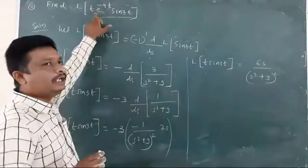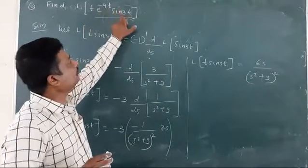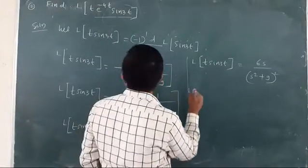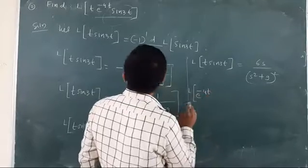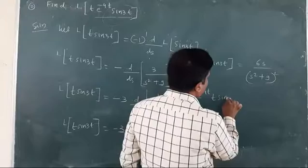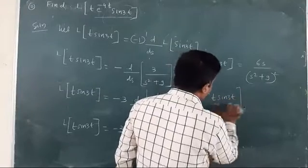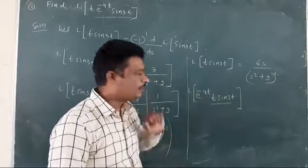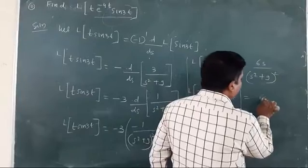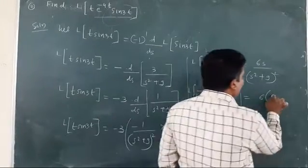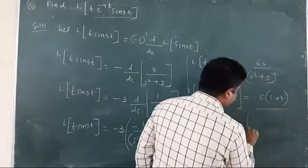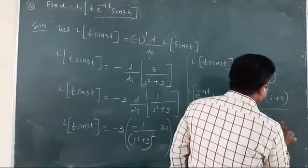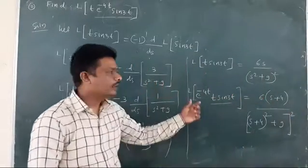Our question is to find L{t · e^(-4t) · sin(3t)}. Now I will apply the first shifting property: L{e^(-4t) · t · sin(3t)} is obtained by replacing s with s+4. So the answer is 6(s+4)/((s+4)² + 9)². This is the required answer.